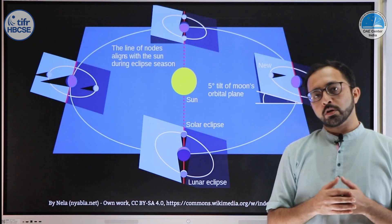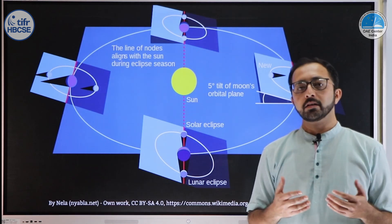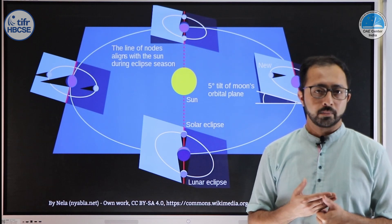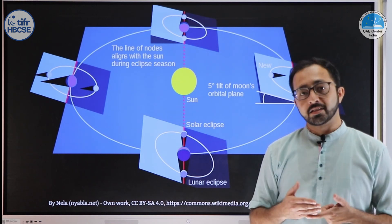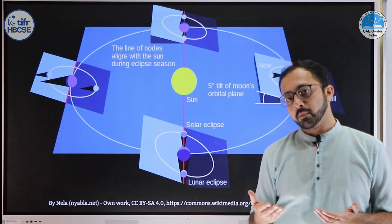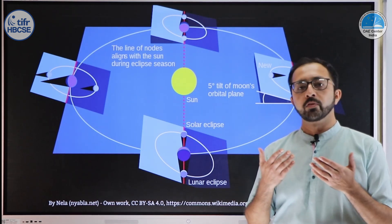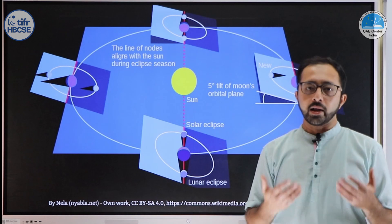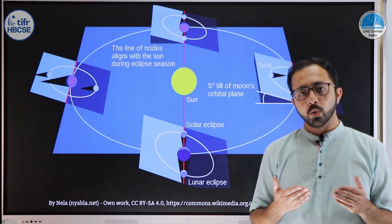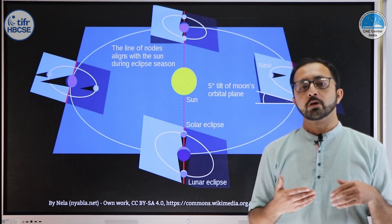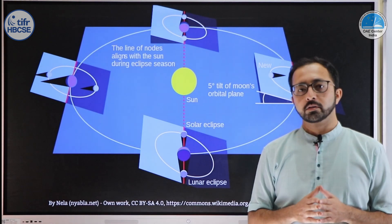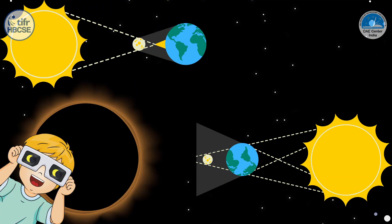In later videos we will talk more in detail about eclipses — for instance, what is a Saros cycle, what are the statistics of eclipses like how many can occur in a year, how many will be solar and how many lunar, and how far the sun or moon should be from the node for an eclipse to occur. Thank you.